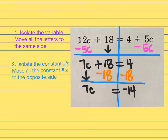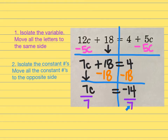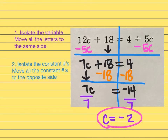For the last step, I can think: 7 times something is negative 14, or I can divide both sides by 7. Negative 14 divided by 7 gives 2 — but it's not just positive 2, it's negative 2. So c equals negative 2, and that is my final answer.